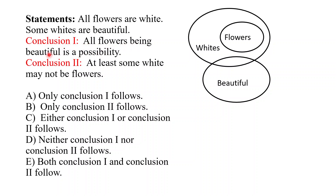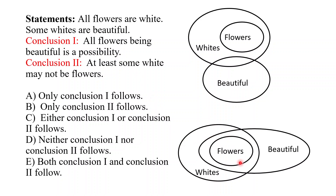Conclusion 1 says: All flowers being beautiful is a possibility. Since it points to possibility, let's draw a possible diagram. In this possible diagram, all flowers are contained within the region of beautiful. You can see that all flowers are in beautiful, so yes, all flowers can be beautiful — it is a possibility. Conclusion 1 is correct.